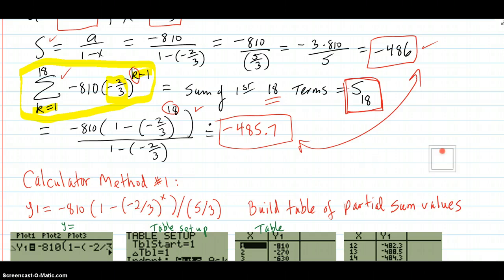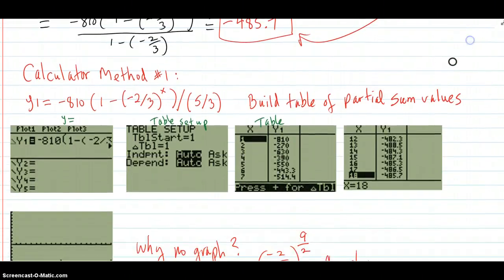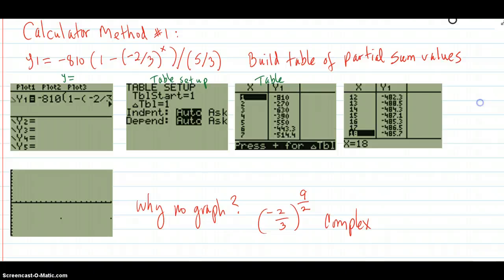Now you can also do this with calculator methods. The first method, just call it number 1, it's no better than number 2, it's just a different one. I'm going to put the partial sum formula into y1 of the calculator. Now there's going to be trouble with the graph if you try to graph it.